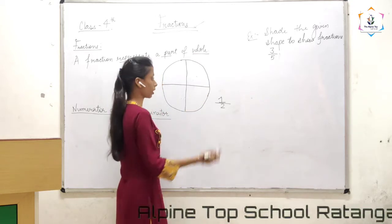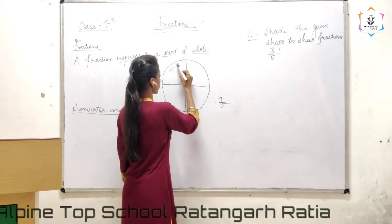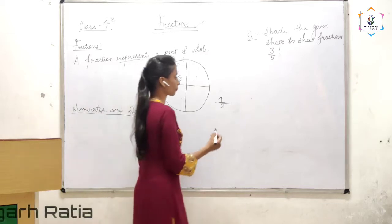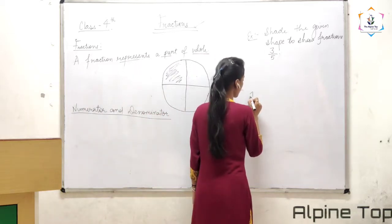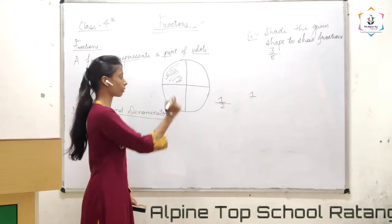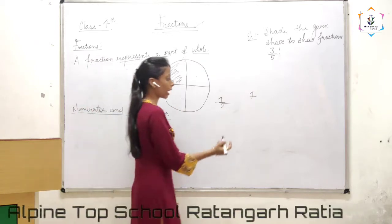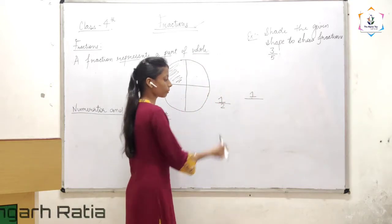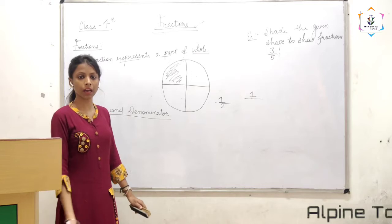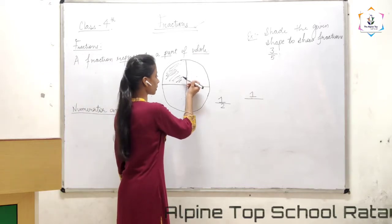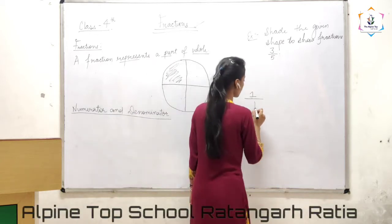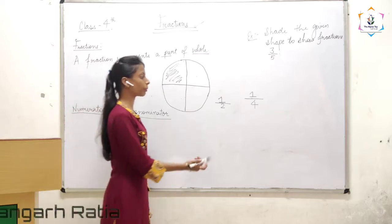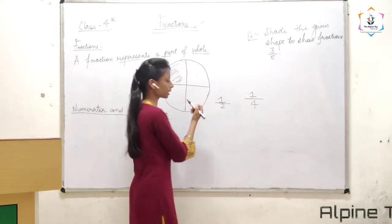Total parts are four. Now if I have to show this one part — the shaded part — how many shaded parts are there? Only one. That we write at the top. And at the bottom we write the total parts. How many total parts? Four. So one by four — one-fourth part is the shaded part of this circle.